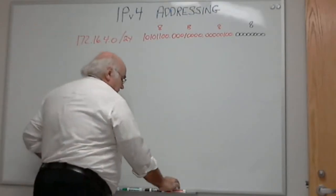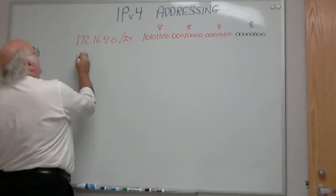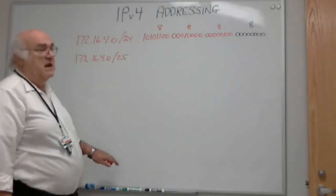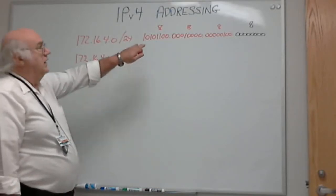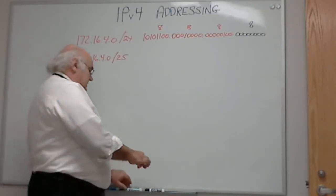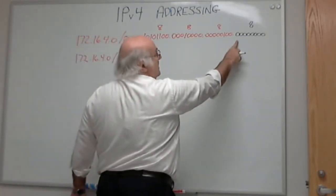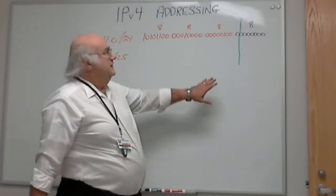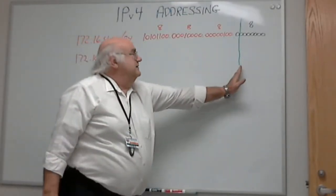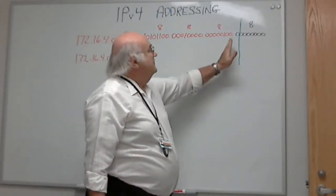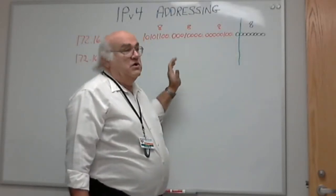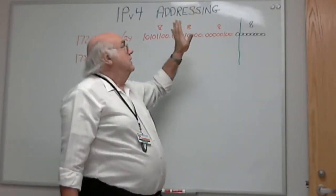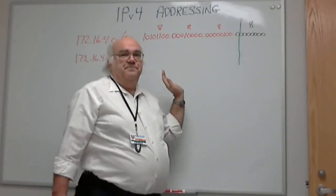We can also have 172.16.4.0/25. This says 25 bits are in the network portion. We take the original 24 bits and steal one more bit — drawing what's called a fence. Everything to the left of the fence is the network portion: 8 plus 8 plus 8 plus 1 equals 25 bits. We continue to the right without skipping any bits. That is now our network portion.